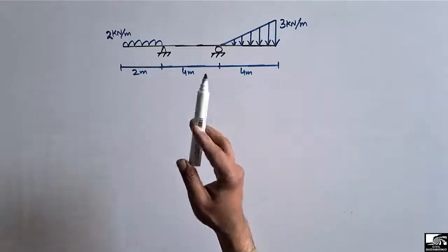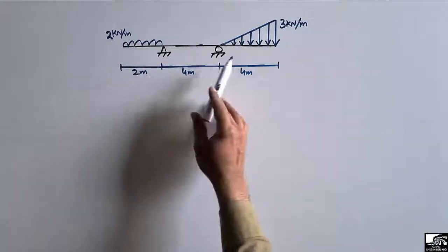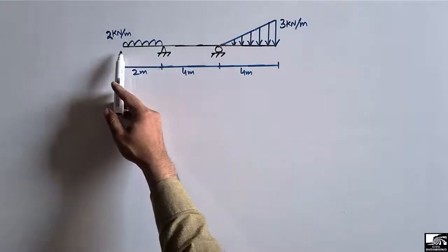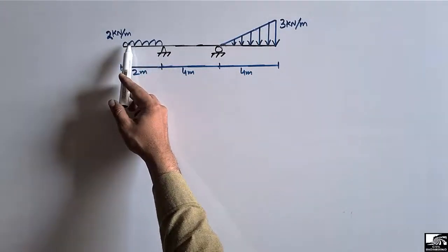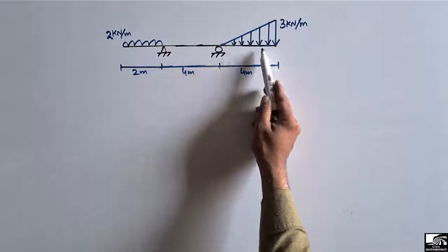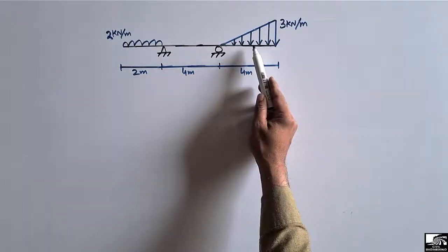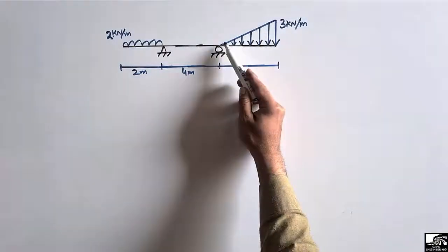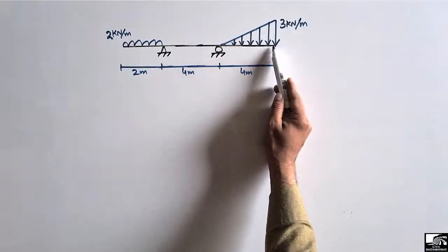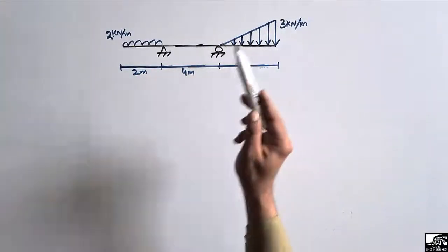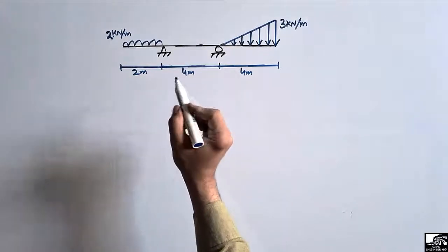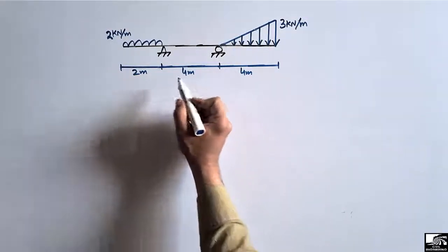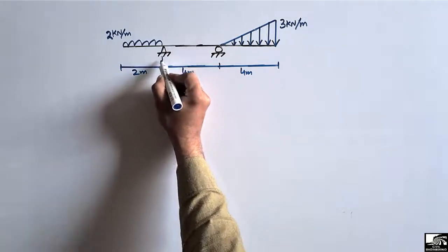There are two different types of load acting on this overhanging beam. One is a uniformly distributed load of 2 kilonewton per meter, and the other is a uniformly varying load — a triangular load — of magnitude 3 kilonewton per meter. We need to find the support reactions and then draw the shear force and bending moment diagram.